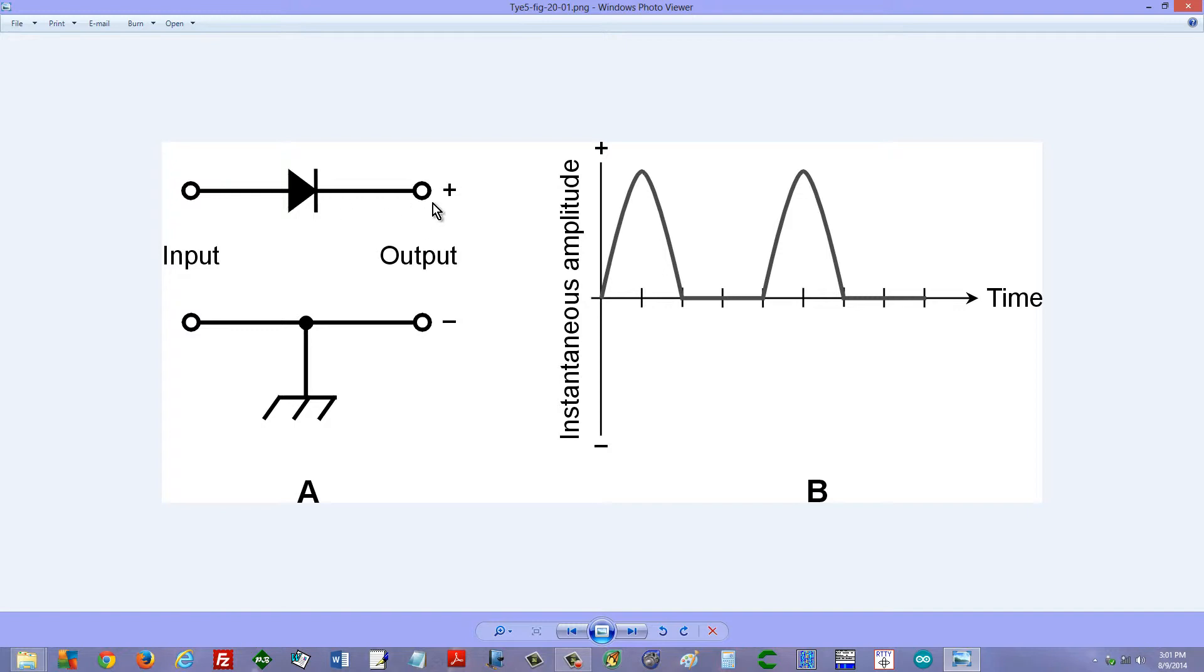So we only get a deficit of electrons here, a deficit of negative charge, which translates into a positive charge. This is figure 20-1 out of the book, Teach Yourself Electricity and Electronics, 5th edition.